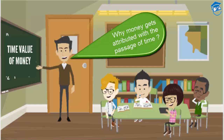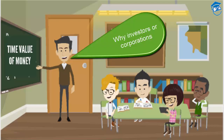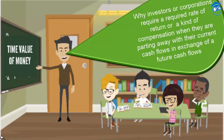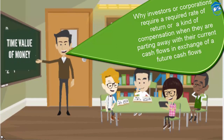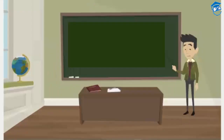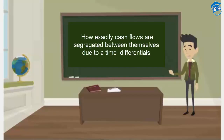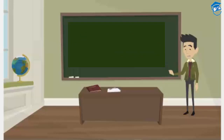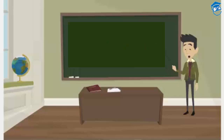We tried to understand why money gets attributed with a value with the passage of time, and why investors or corporations require a required rate of return — a kind of compensation — when they are parting away with their current cash flows in exchange for a future promised cash flow. We also understood why present-day cash is of higher value than cash received years down the line, and how cash flows are segregated due to time differentials in financing, investment, and liquidity or dividend decisions.